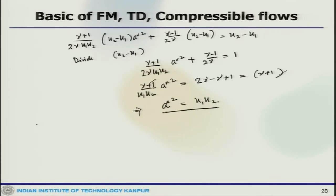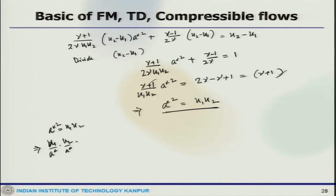If we solve for a-star, that gives us a*² = u₁u₂. Dividing both sides by a*², we get (u₁/a*) · (u₂/a*) = 1, which means M₁* · M₂* = 1, so M₂* = 1/M₁*.